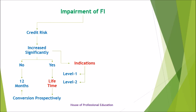Level 3: an entity shall measure the loss allowance of a financial instrument at an amount equal to lifetime expected credit losses, and effective interest will be calculated on the gross carrying amount of the financial instrument before deducting expected losses. An entity can rebut this presumption when it has reasonable and supportable information available that demonstrates that even if payments are past due by 30 days or more, it does not represent a significant increase in the credit risk of a financial instrument. Level 3 is applicable in case of credit impairment, and effective interest will be calculated on the net carrying amount of the financial instrument.